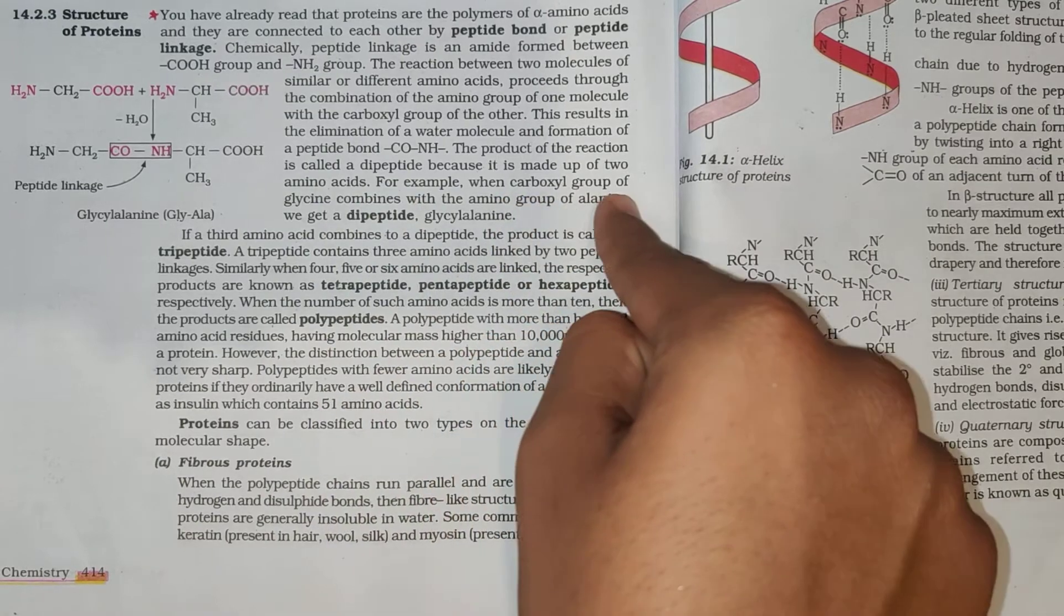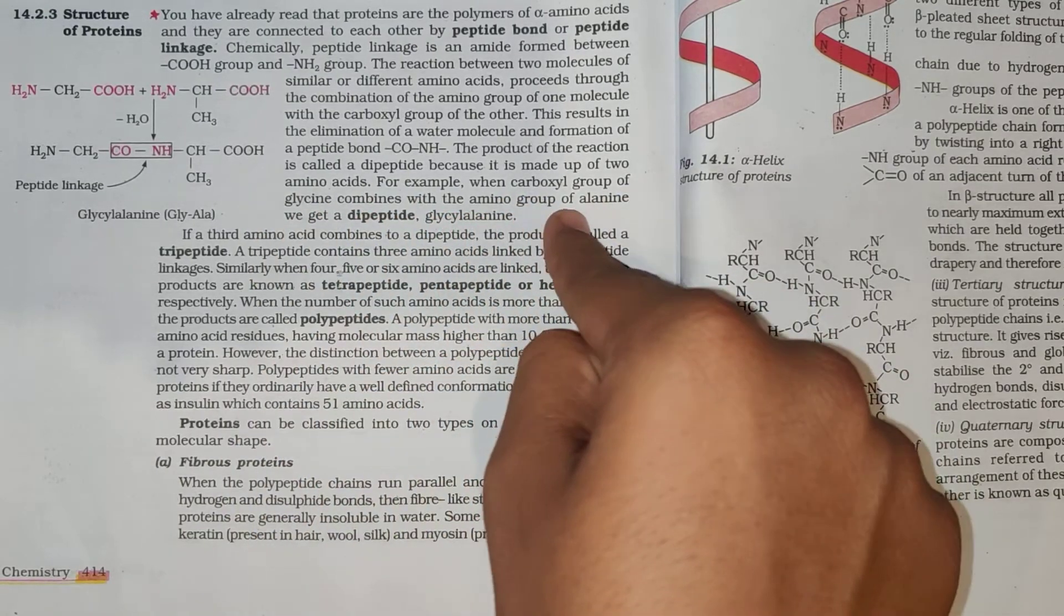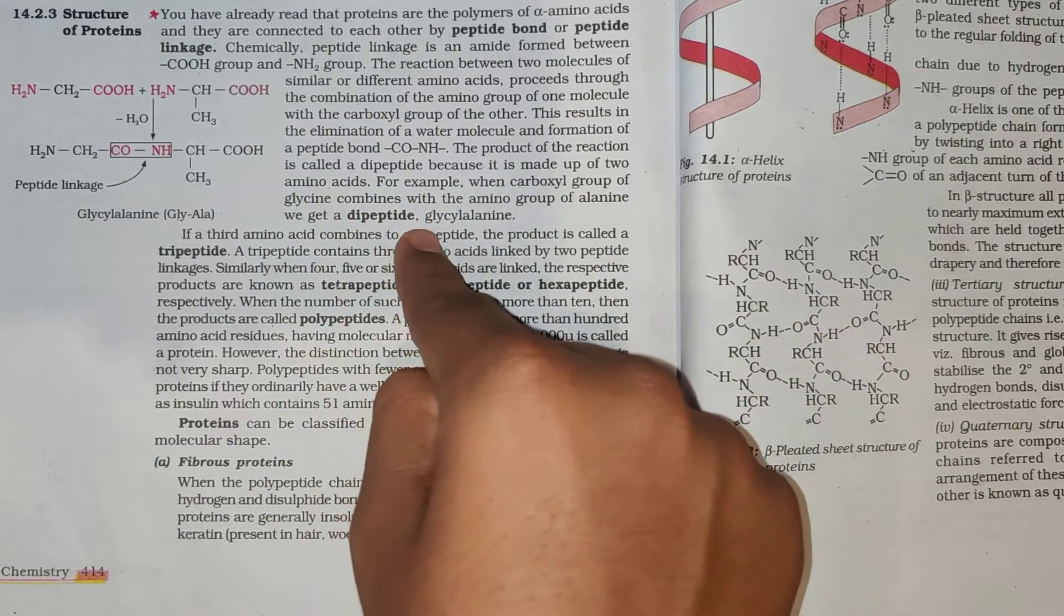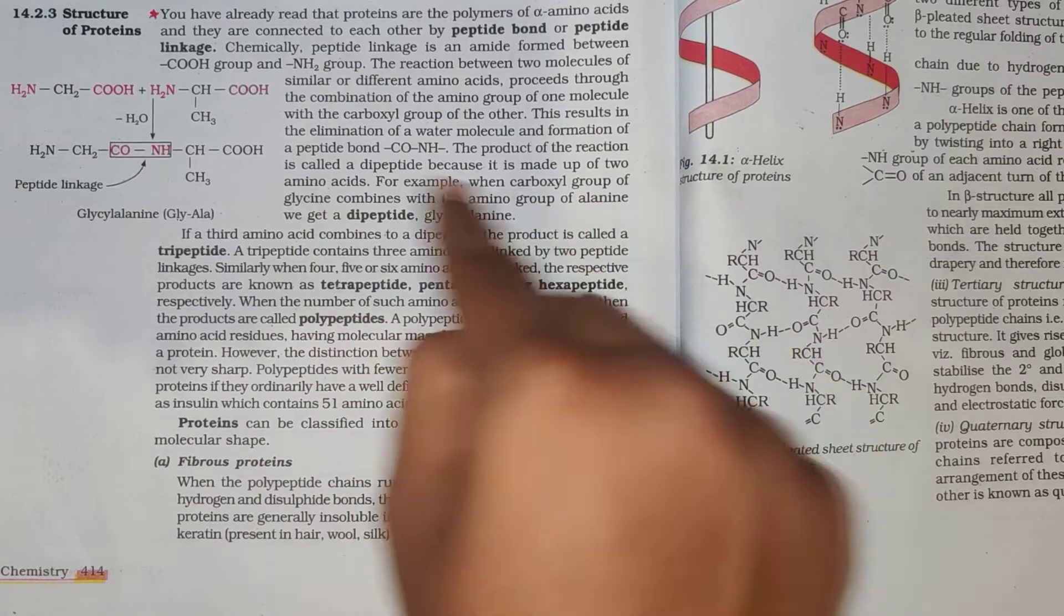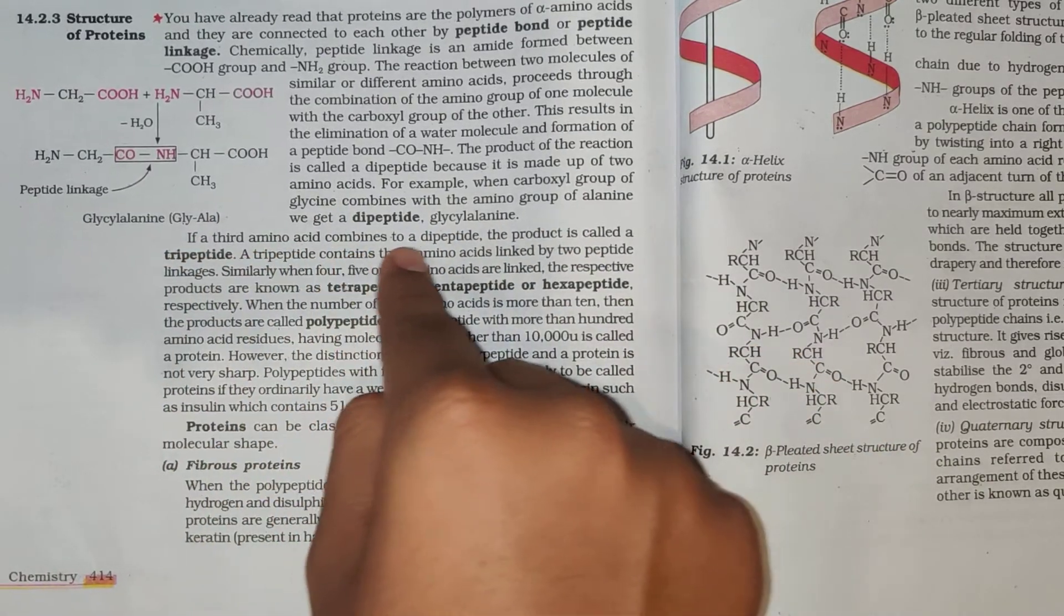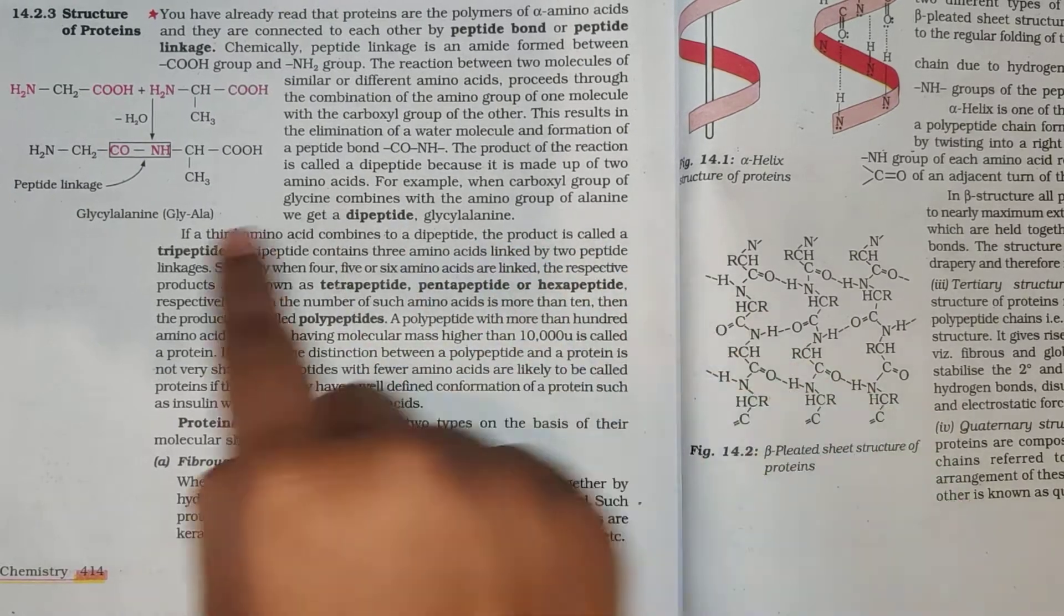The product of the reaction is called a dipeptide because it is made up of two amino acids. For example, when carboxyl group of glycine combines with the amino group of alanine, we get a dipeptide, glycylalanine. If a third amino acid combines to a dipeptide, the product is called a tripeptide.